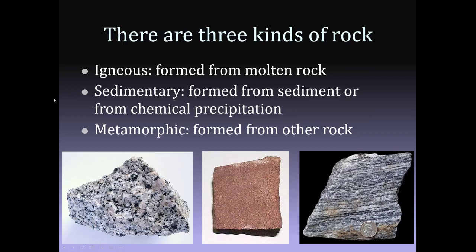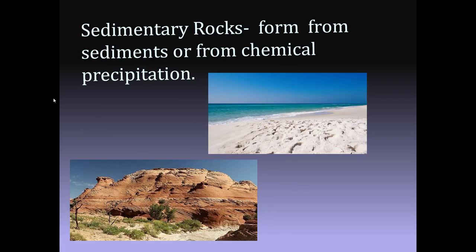Remember that there are three kinds of rocks: igneous, sedimentary, and metamorphic. Last time we talked about igneous. This time we'll be talking about sedimentary and metamorphic. Igneous form from molten rock, and then sedimentary form in a couple of different ways — either from sediment or from chemical precipitation. Take some sand like on a beach, cement that sand together and you make, oddly enough, sandstone.